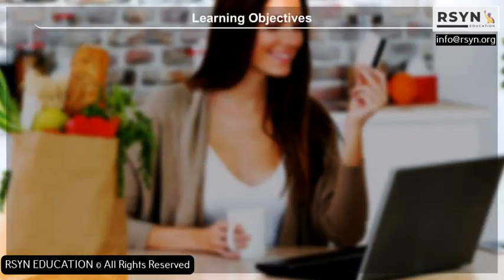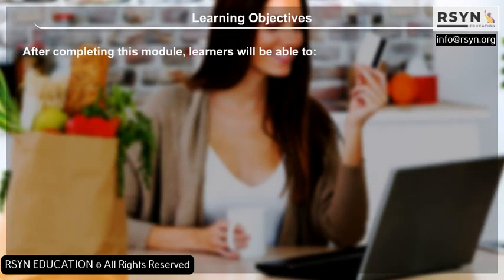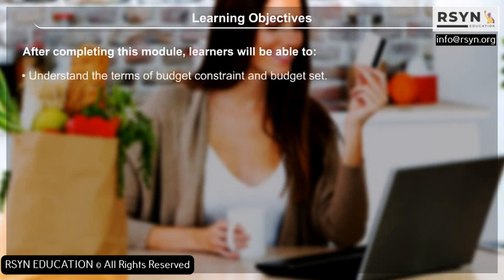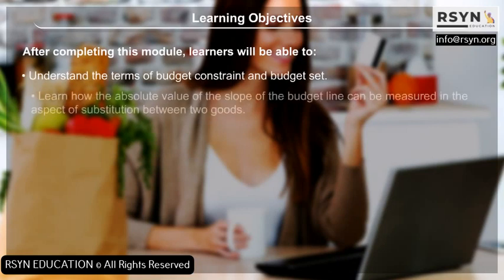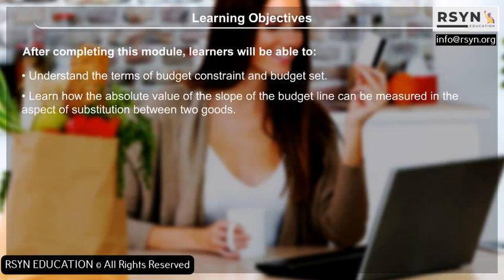Learning Objectives: After completing this module, learners will be able to understand the terms of budget constraint and budget set. They will learn how the absolute value of the slope of the budget line can be measured in the aspect of substitution between two goods.